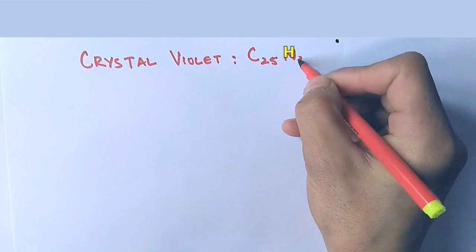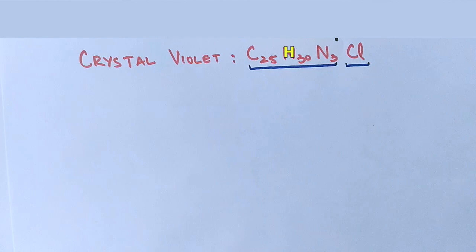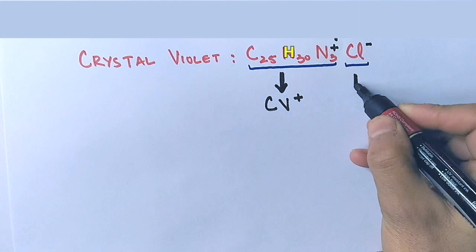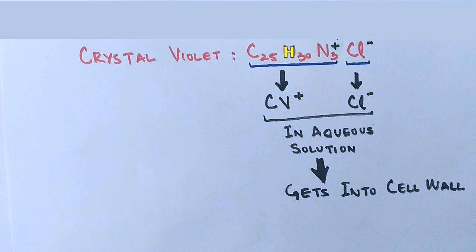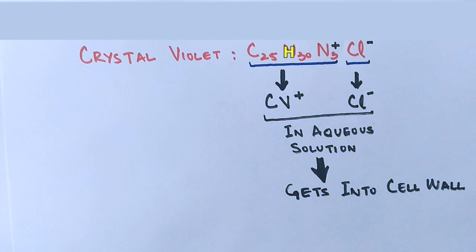When we look at the molecular formula of crystal violet dye, it is C25H30N3Cl. This crystal violet dye splits into charged species in aqueous solution: CV positive, from the C25H30N3 part, and Cl negative. In aqueous solution, dissociation occurs and both charged species get into the wall of bacteria and remain there. The primary dye charged elements — CV positive and Cl negative — are trapped in both cell types, Gram positive and Gram negative, as they are yet to be treated with water and alcohol.